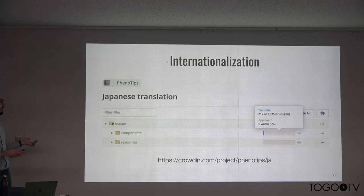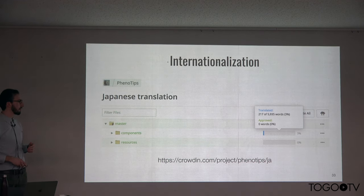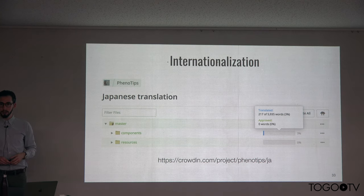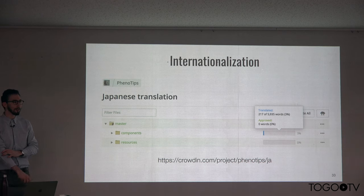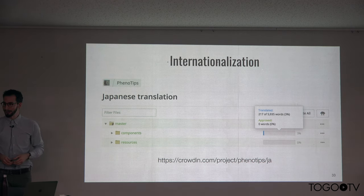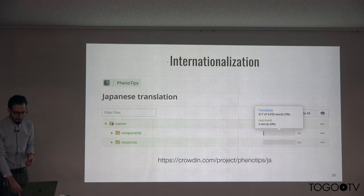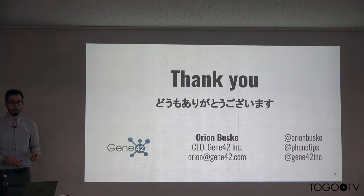Also, if anyone is interested, the translation effort is currently on Crowdin — the same platform the Human Phenotype Ontology uses for translation. There is a Japanese project there that is at its infancy, so if anyone is interested or knows anyone who would be interested in helping translate that, please let me know. We will hopefully be working on some of that over the coming weeks as well. Thank you very much for having me and for your attention.